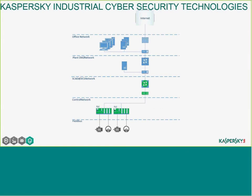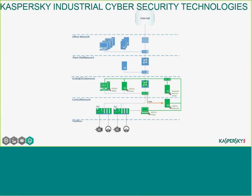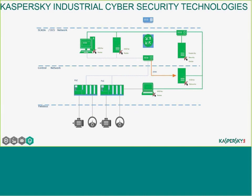To understand how Kaspersky Industrial Cybersecurity technology can be implemented in your architecture: it's the same standard architecture I showed at the beginning — Office Network, Plant DMZ, SCADA, Control Network, field buses. We can install KICs for Nodes on stations running a SCADA system. We also have KICs for Networks to protect your network from all the attack vectors shown earlier. Everything is managed by a Kaspersky Security Center, where all information is centralized in one point. This technology is available to install in your architecture to protect your system and network.